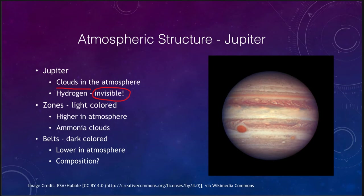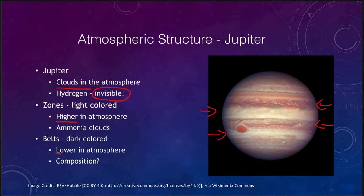Jupiter is divided into alternating light and dark bands. We call the lighter colored areas zones and the darker colored areas belts. There are different sections, and because we're looking at an atmosphere rather than the surface of a ball, the lighter colored zones are actually areas that are higher up in the atmosphere, while the belts are lower down. The zones are known to be made of ammonia clouds, although the composition of the belts is still something in question.